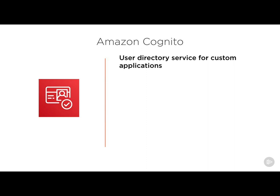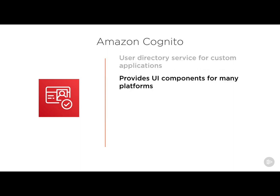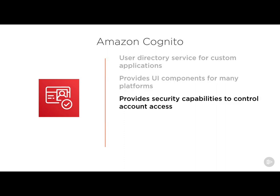IAM deals with permissions for AWS resources, but what if you want to build something like IAM for your own custom applications? Amazon Cognito fills that role. But it does more than just that — it also provides UI components for many platforms. So if you want a sign-in or sign-up UI for your iOS, React web, or Android application, you can get those out of the box with Cognito.